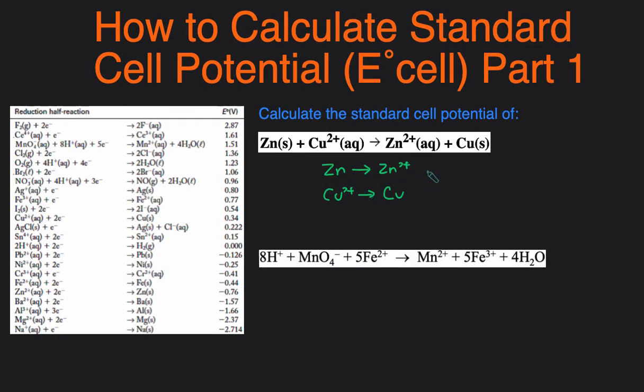Then next we add electrons to balance the charges. So we're going to add two electrons here, because this is positive two, and then we add two electrons that make the zero and the other side zero. And then likewise, we're going to add two electrons over here to make both sides zero, so they're the same charge.